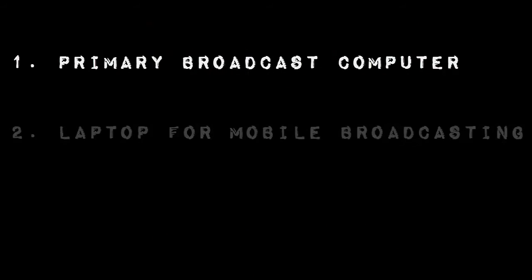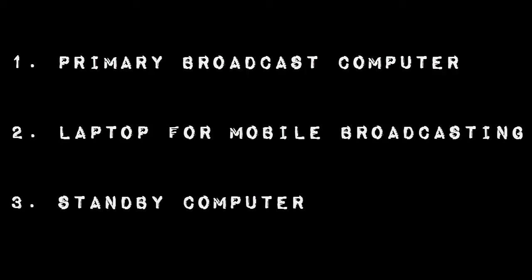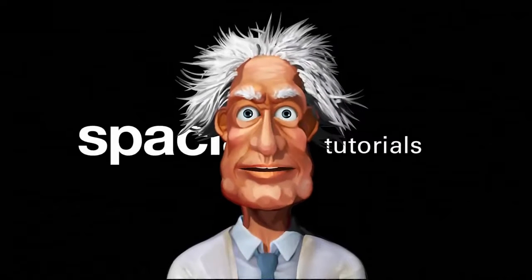The first is intended for your primary broadcast computer, the second activation is for a laptop for mobile broadcasting, whilst the third is for a standby computer in case either of your other two activated computers has a problem.